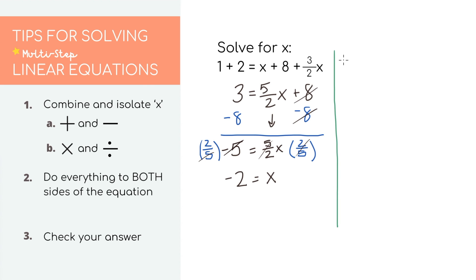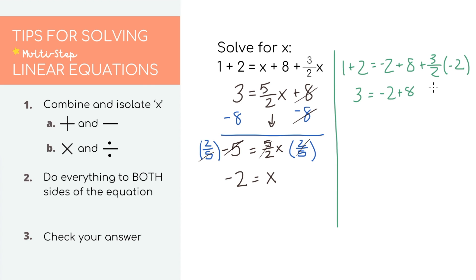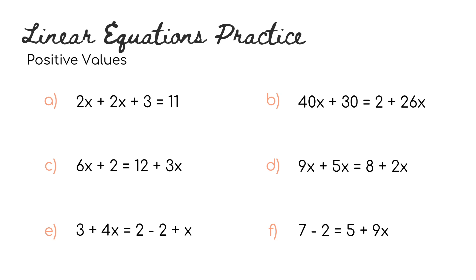When we plug back in our answer, we get that 1 plus 2 equals negative 2 plus 8 plus 3 over 2 times negative 2. Simplifying, we get 3 equals negative 2 plus 8 minus 3. We have 3 equals 3, so we know we have the right answer. Here I have 6 more equations you can try out on your own.